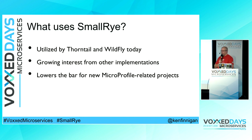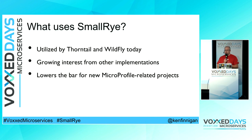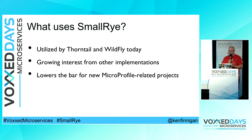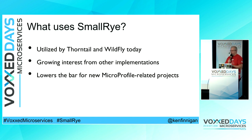So what uses SmallRye today? Obviously Thorntail uses it because that's where a lot of the original code came from. Also WildFly 14 now uses it for OpenAPI, HealthCheck, and Config. They're currently also working on a metrics use for SmallRye as well, but at the moment it's just those three. We've had growing interest from other implementers of Eclipse MicroProfile, and it really wants to lower the bar for any new MicroProfile related projects or vendors to start using the specifications.